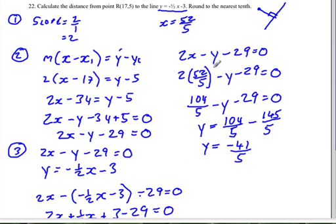And so our point where they intersect will be 52 over 5 and negative 41 over 5.